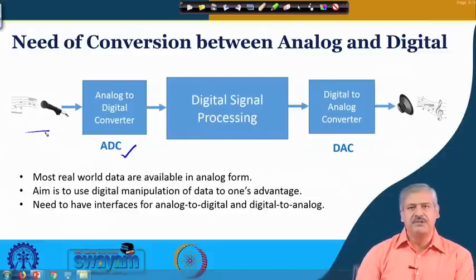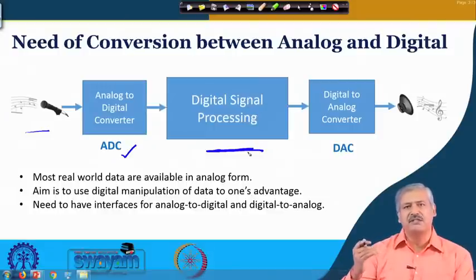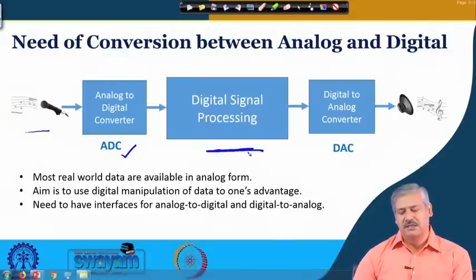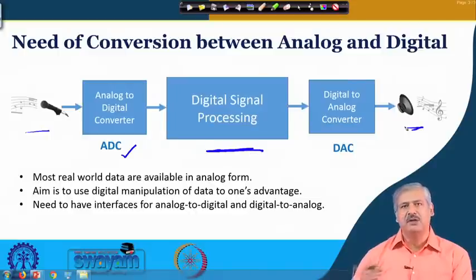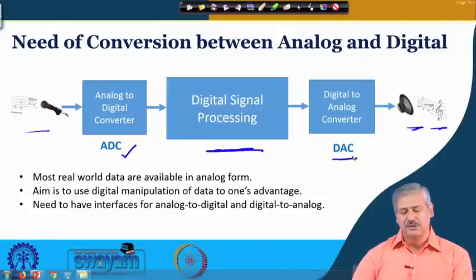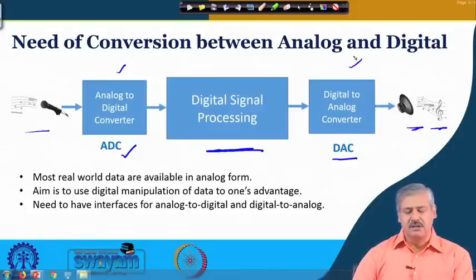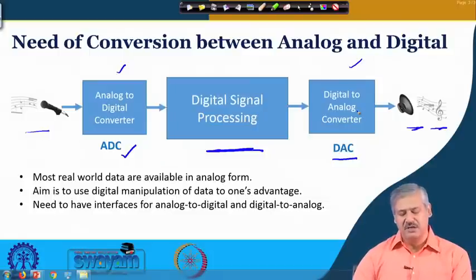Consider a sound or audio signal: you capture it through a microphone, then the analog to digital converter converts it to a digital stream. Then you do some manipulation — some frequencies are boosted, some are attenuated — and it is good to use digital processing because of its advantages. After processing, you want to play it through a speaker, which continuously changes position to generate a sound wave, so you need to generate a continuous-time signal. For that we need a digital to analog converter. At one end we have an ADC and at the other end a DAC — this is the interface circuit.